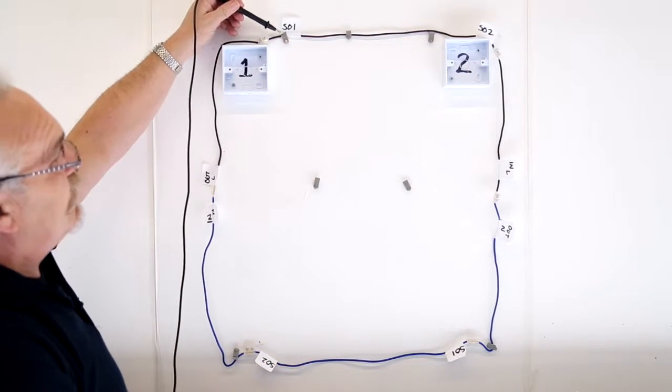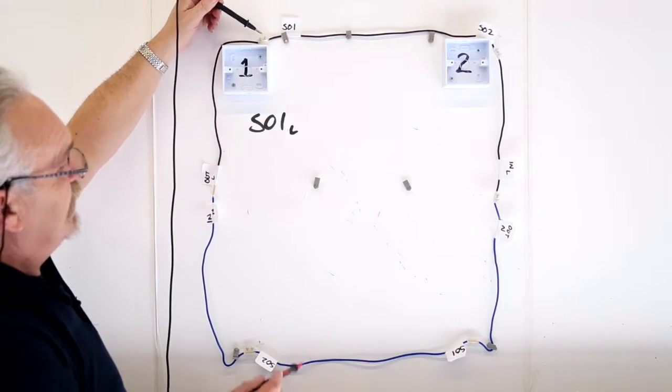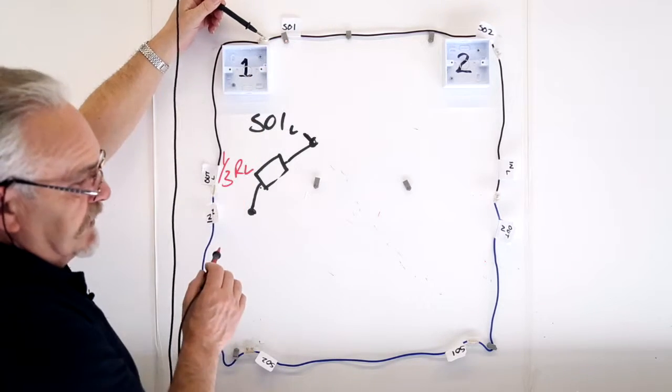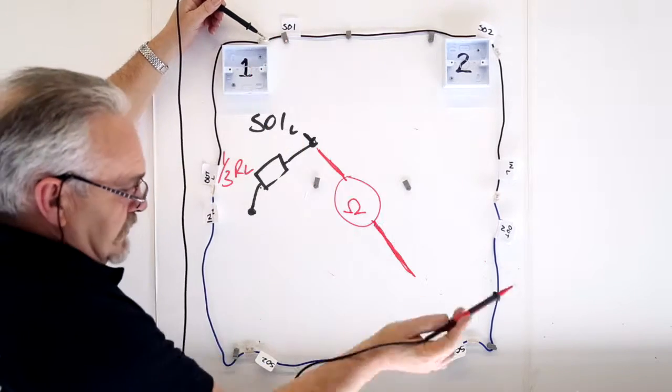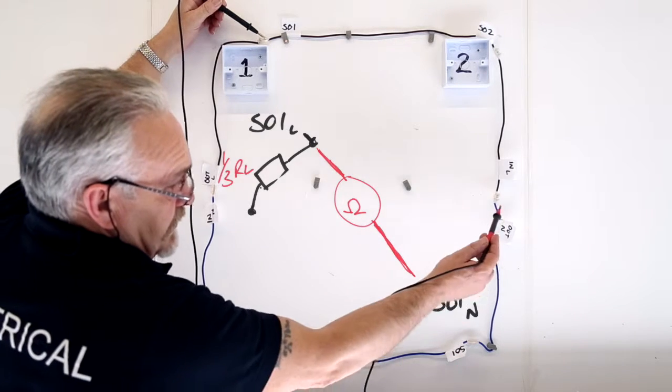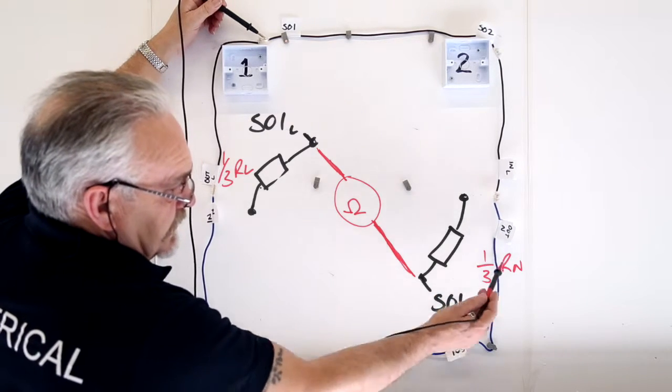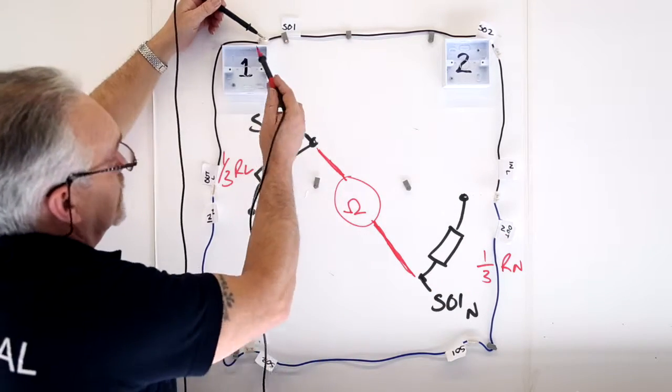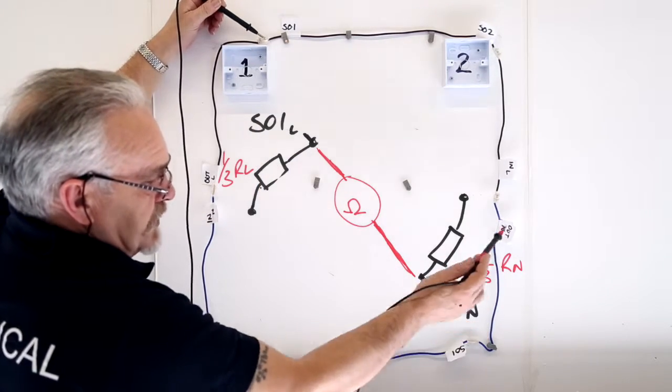Now, socket outlet one is at this point. Third of the way along that conductor. The corresponding neutral for socket outlet one is over here. A third of the way of the outgoing from the distribution point.